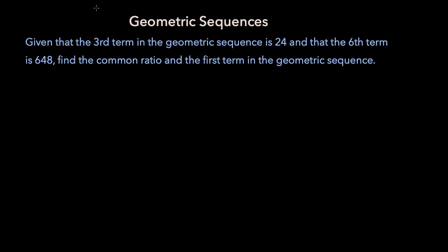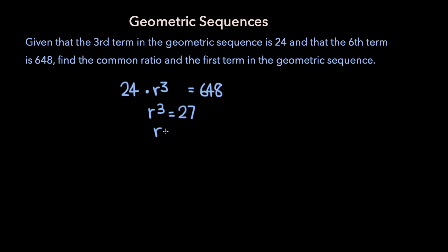Now let's try this slightly more challenging problem. Given that the third term in the geometric sequence is 24, and that the sixth term is 648, find the common ratio and the first term. To get from the third term, which is 24, to the sixth term, which is 648, we need to multiply by the common ratio three times. So 24 times r cubed is equal to 648. 24 times r gives the fourth term, 24 times r squared gives the fifth term, and 24 times r cubed gives the sixth term, which is 648. Dividing both sides by 24, we get r cubed is equal to 648 over 24, which is 27, and so r is equal to 3.